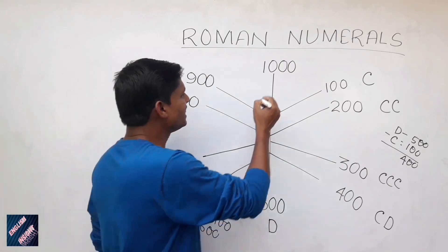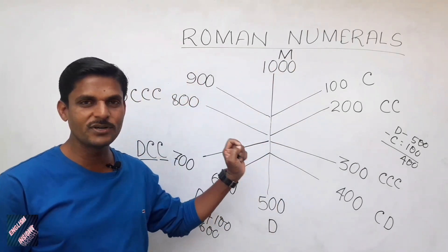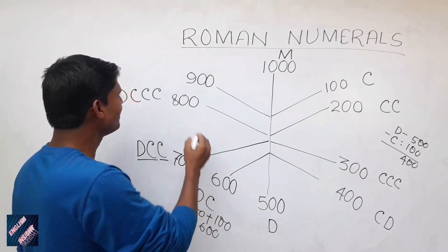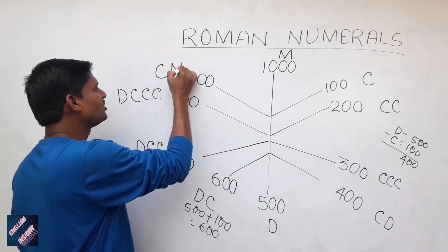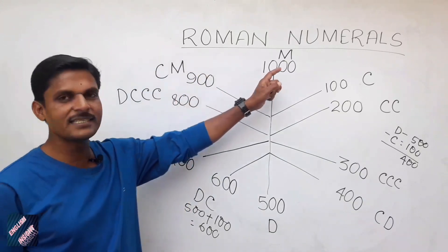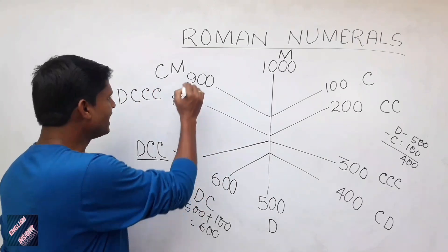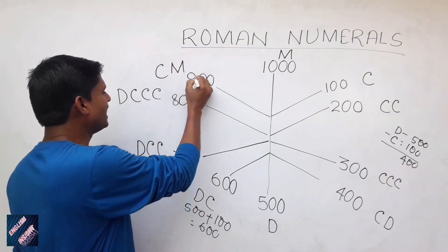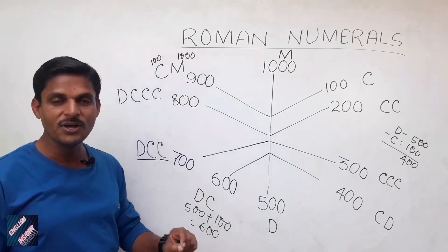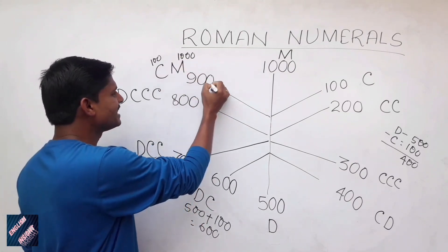What about 1000? 1000 is M in Roman numerals. So you must have guessed — what about 900? 900 is CM. Why? M is 1000 and C is written before M, so 900 is C less than M — meaning 100 less than 1000. So 1000 minus 100 equals 900.